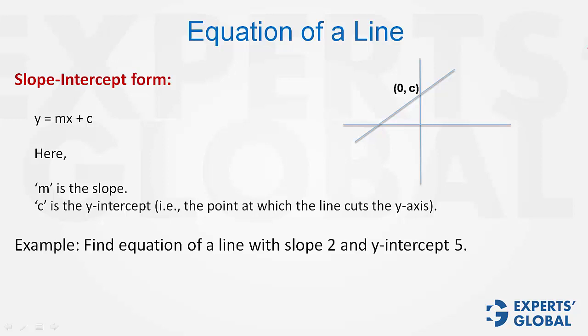Take an example. Find the equation of a line with slope 2 and y-intercept 5. m is equal to 2 here, c is equal to 5, and therefore, the equation of the line is quite simply y equals 2x plus 5.